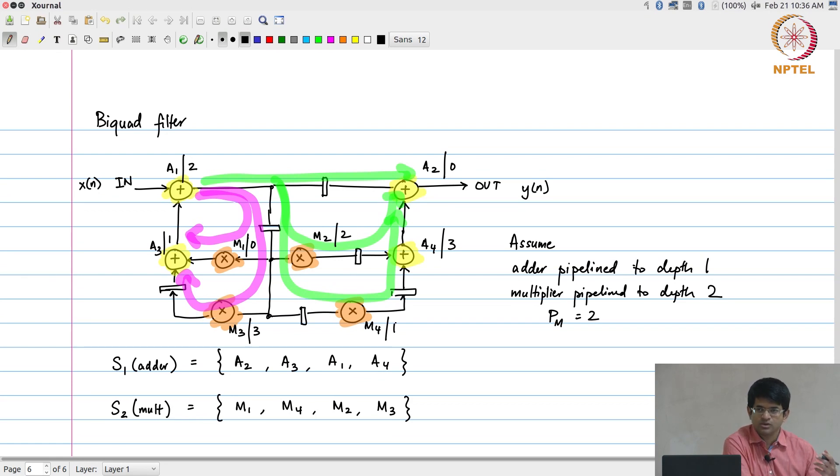So if I wanted to systematically take any data flow graph and implement it on a limited amount of hardware, effectively this is what needs to be done. I need to somehow come up with these assignments. How we come up with the assignments is the topic of scheduling. We will get to that next after we have completed this. The purpose of doing this exercise is to say, once I have a schedule, how do I, at least this is one way by which I can implement it.